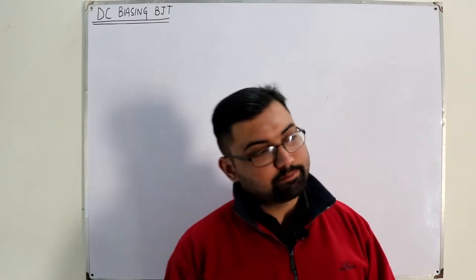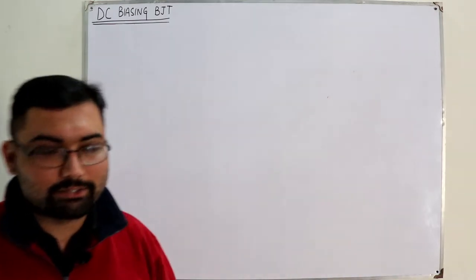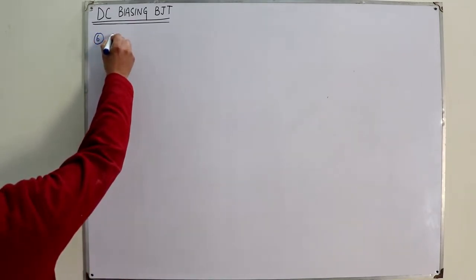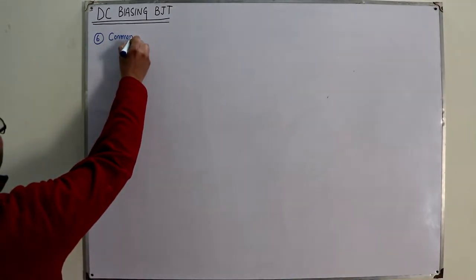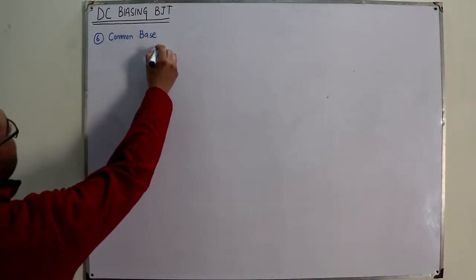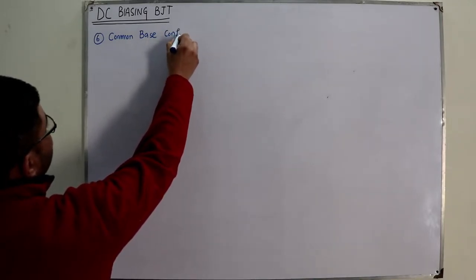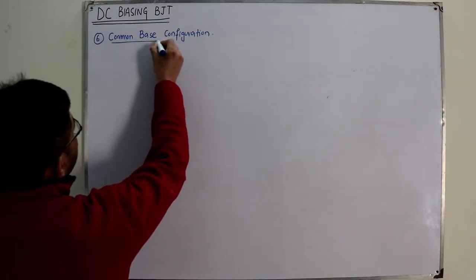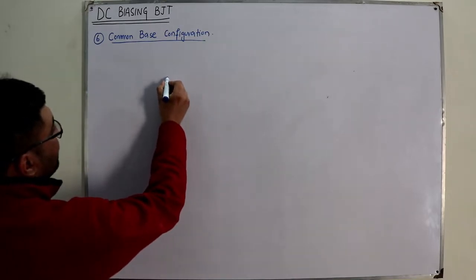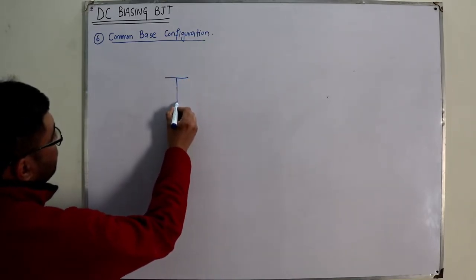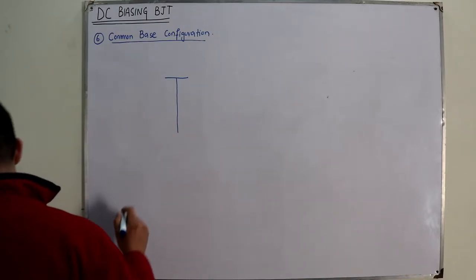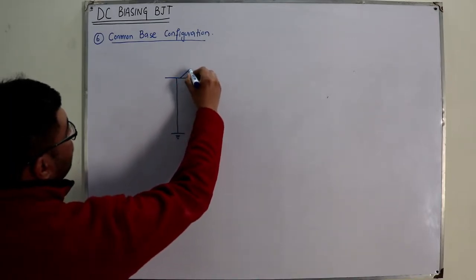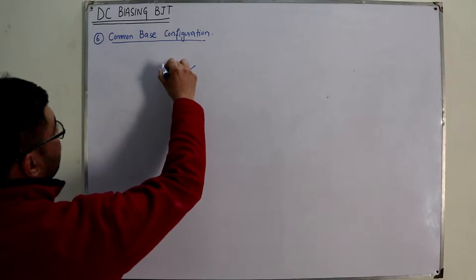Bismillahirrahmanirrahim, Assalamu Alaikum. Welcome back to Salah Khan's YouTube channel. Today is the sixth biasing configuration - the common base configuration. As the name suggests, the base is common to the input and output side. The base terminal has been grounded. This is your collector terminal and this one is your emitter terminal.